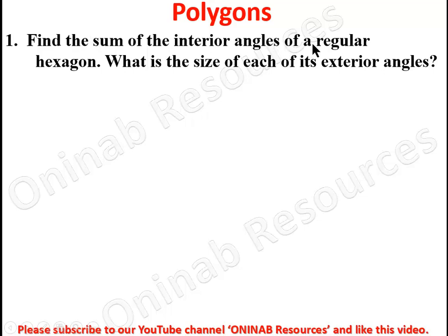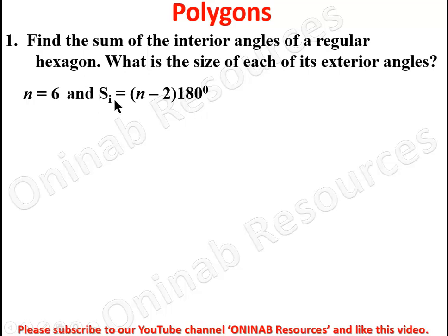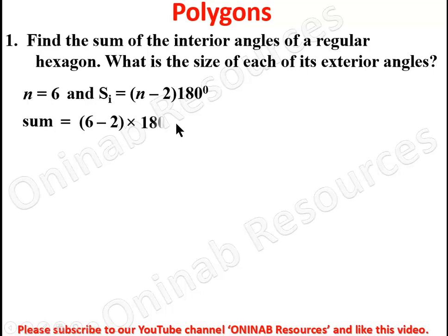Find the sum of the interior angles of a regular hexagon. What is the size of each of its exterior angles? A hexagon is a six-sided polygon, so n is equal to 6. The sum of interior angles of any polygon is n minus 2 multiplied by 180 degrees. With n equal to 6, we have 6 minus 2 multiplied by 180.